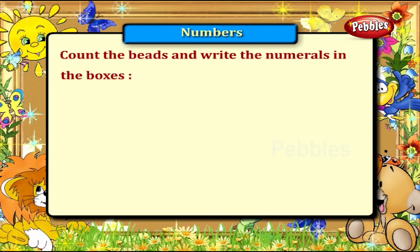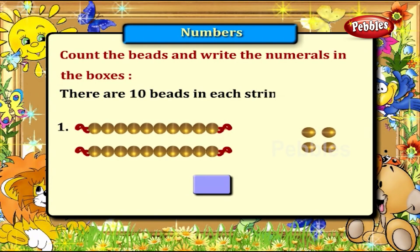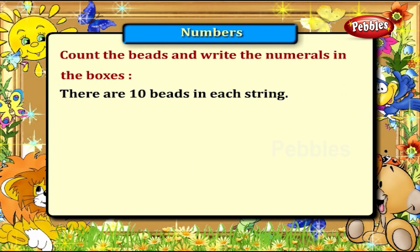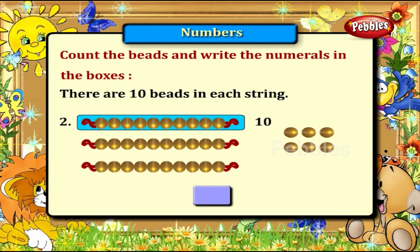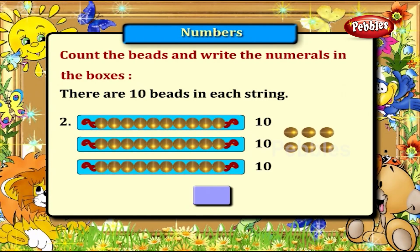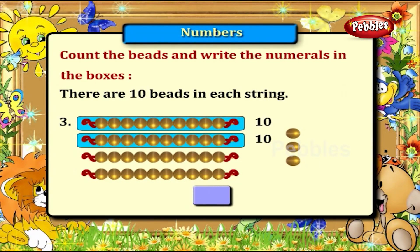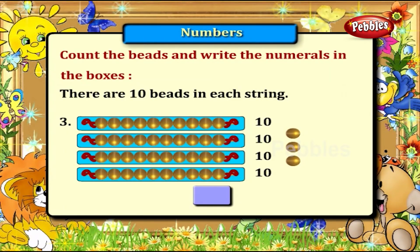Count the beads to write the numerals in the boxes. There are ten beads in each string. Ten plus ten plus four is equal to 24. Ten plus ten plus ten plus six is equal to 36. The third string: ten plus ten plus ten plus ten plus three is equal to 43.